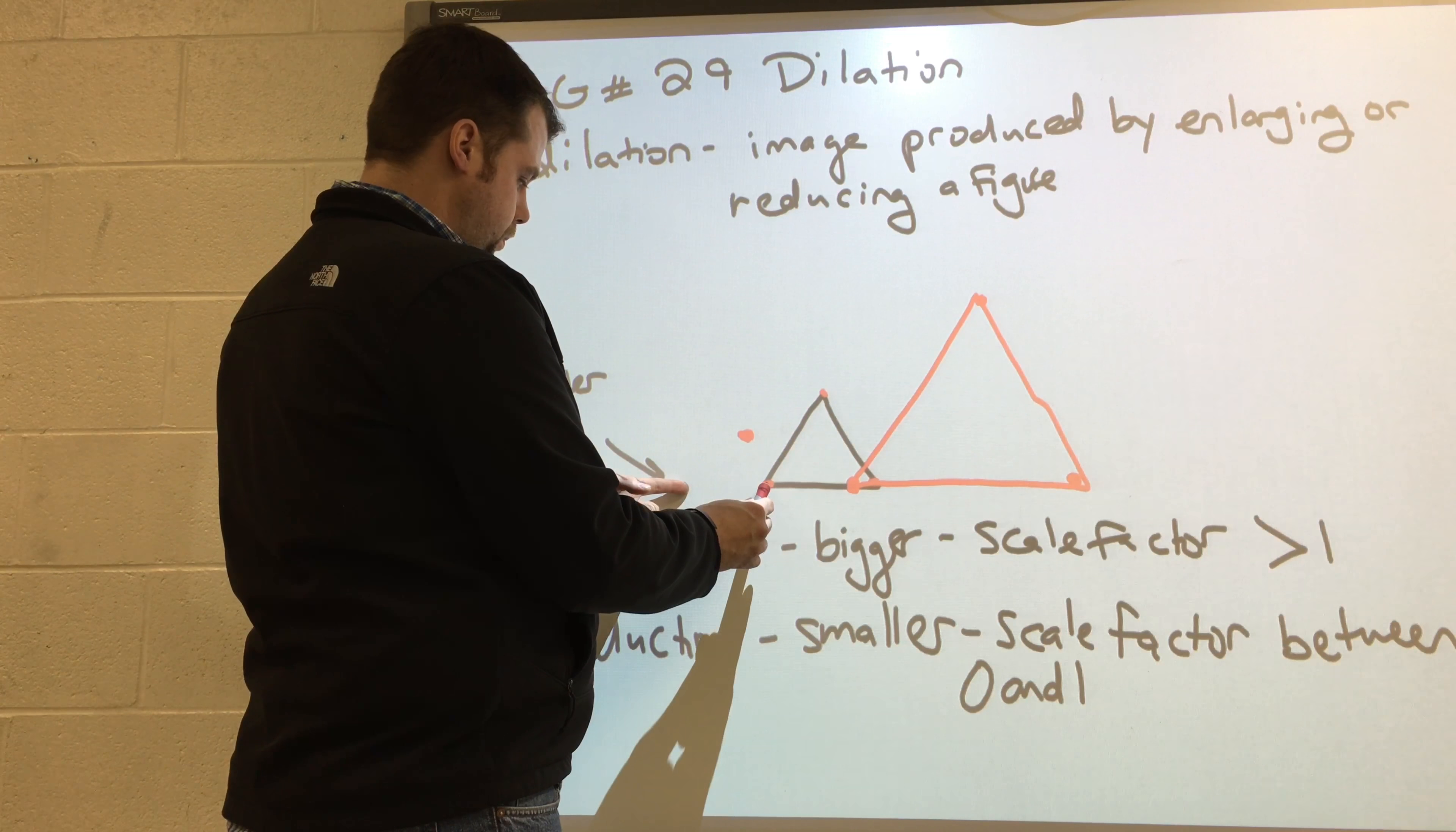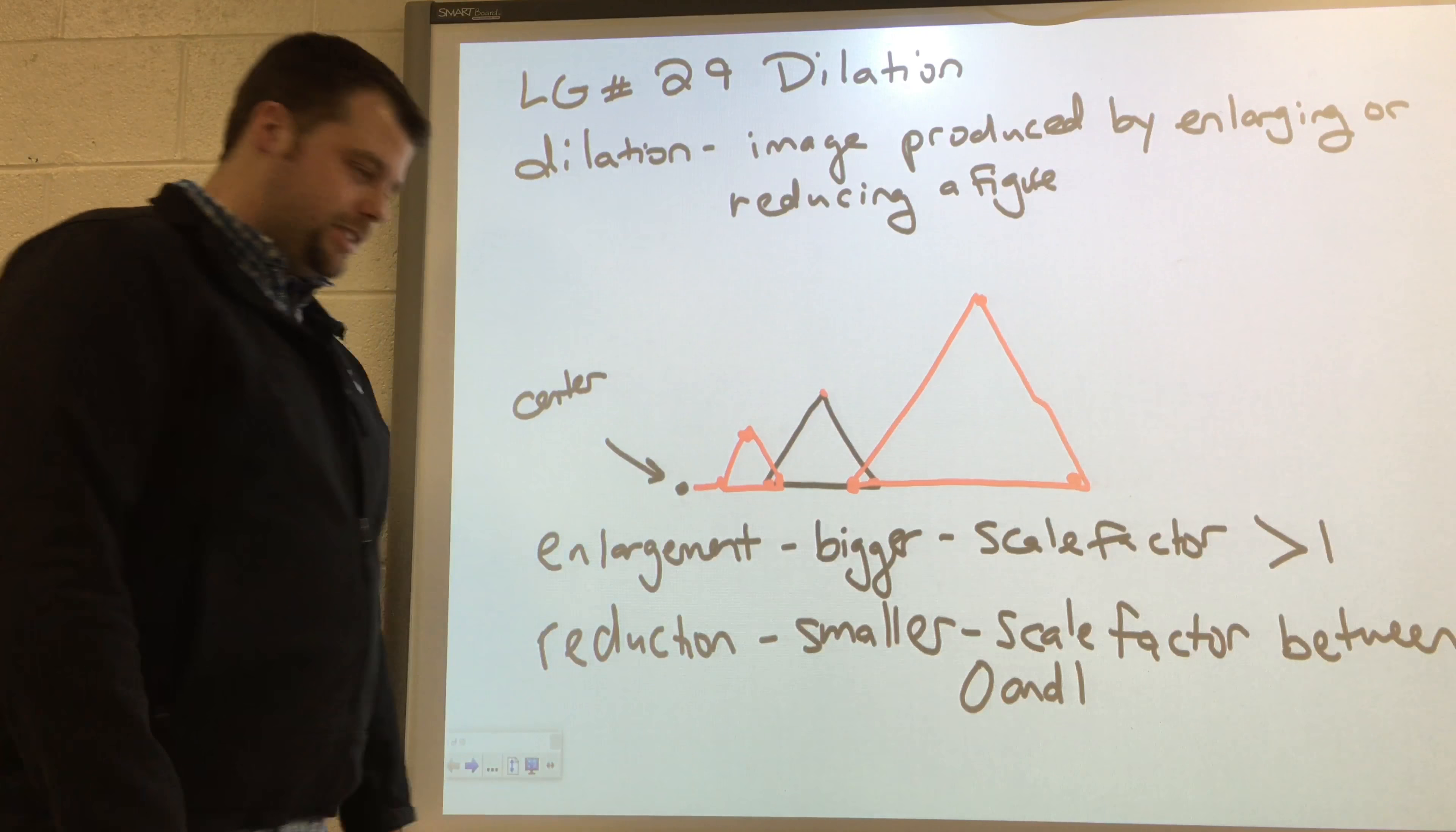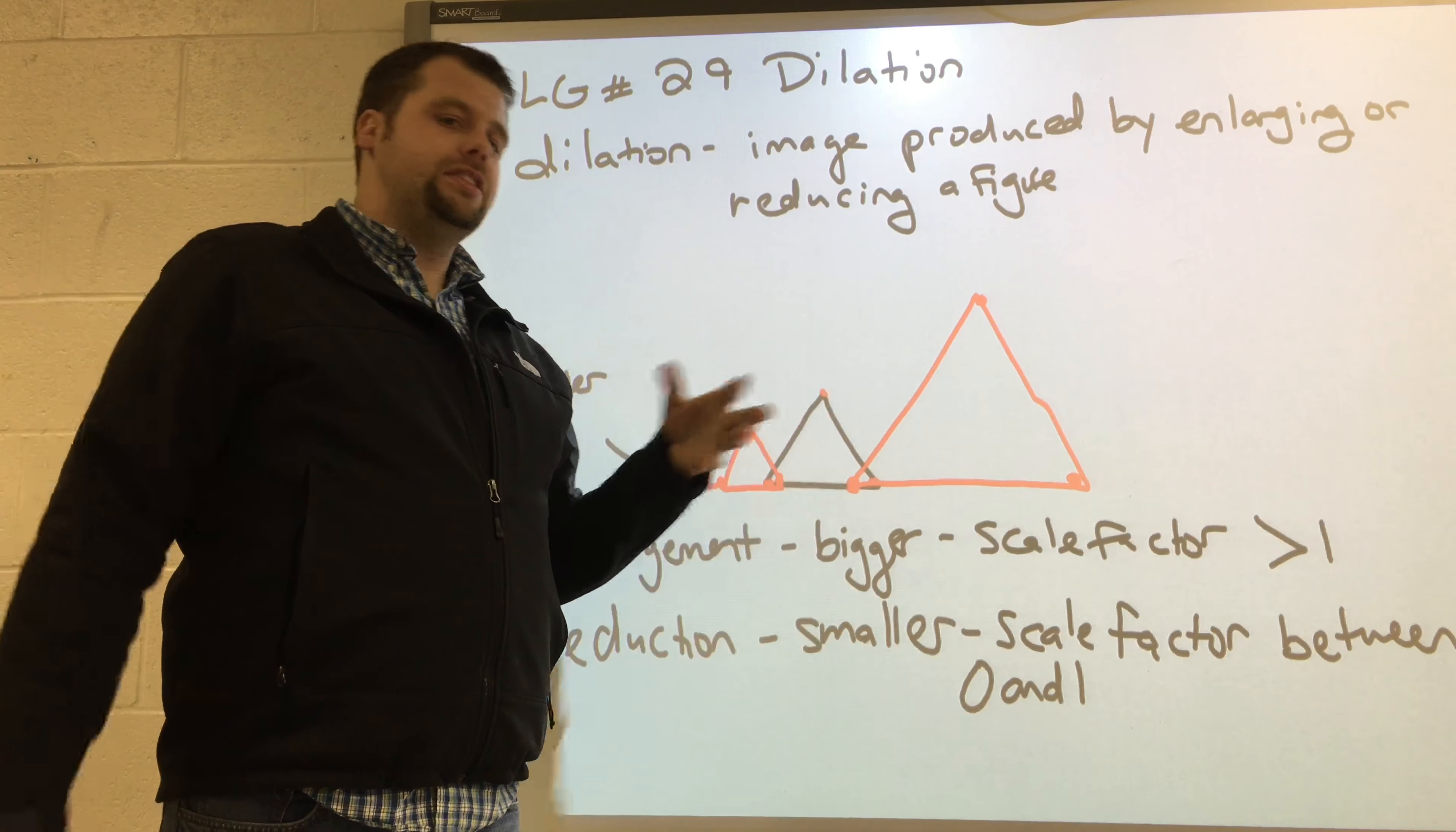And do this. And then do this. And that would have a scale factor of one half. That's a reduction. Scale factor between zero and one. Enlargement bigger, scale factor greater than one.